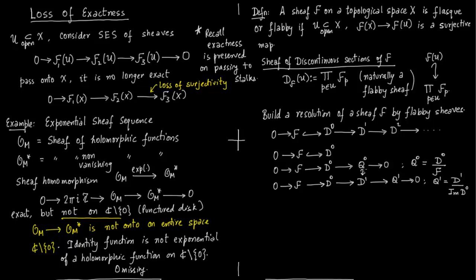Continuing: 0 → F → D0 → D1. Now take the sheaf of discontinuous sections of Q1 and denote it D2. Q1 naturally embeds into D2. Then write Q2 → 0; to make it exact you need Q2 = D2 / image(D1). And so on — you are constructing a sequence of exact sequences.